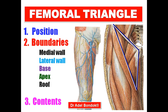The roof consists of skin, superficial fascia, and deep fascia. The superficial fascia contains the great saphenous vein and the superficial branches, or cutaneous branches, of the femoral nerve. The deep fascia contains the saphenous opening.